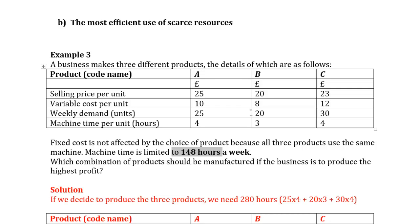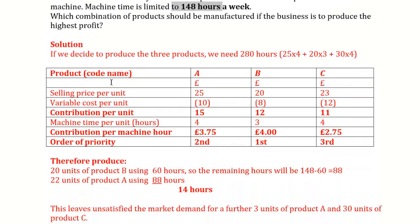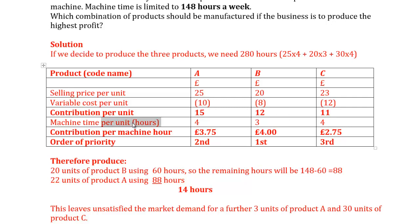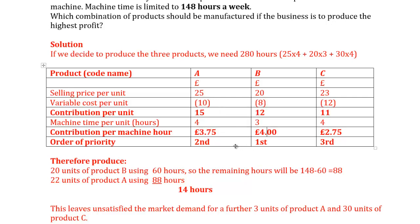We need to calculate the contribution margin per limited resource — per machine hour. Contribution margin per unit: A = £25 − £10 = £15; machine time 4 hours, so contribution per machine hour = £15 ÷ 4 = £3.75. For product B: contribution per machine hour = £4. For product C: £2.75. Based on this, product B is best, so it should be produced first, then product A, then product C.